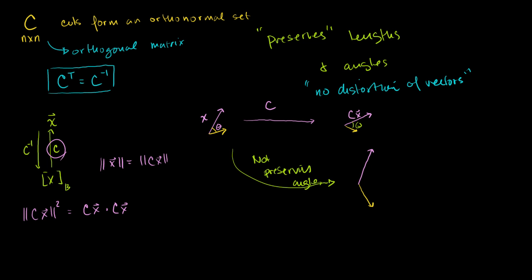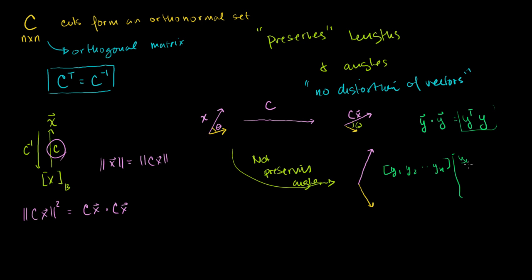The length of Cx squared is the same thing as Cx dot Cx. It's always useful to remind ourselves that y dot y is the same thing as y transpose times y, treating them as matrices. Because y transpose times y gives you y1 squared plus y2 squared, all the way to yn squared — which is exactly y dot y.